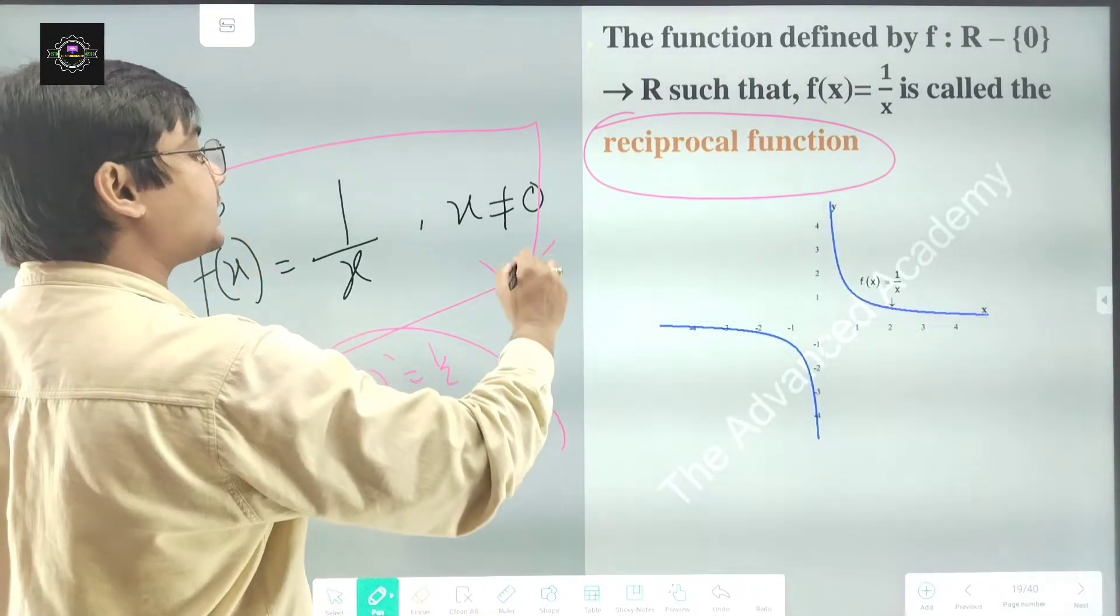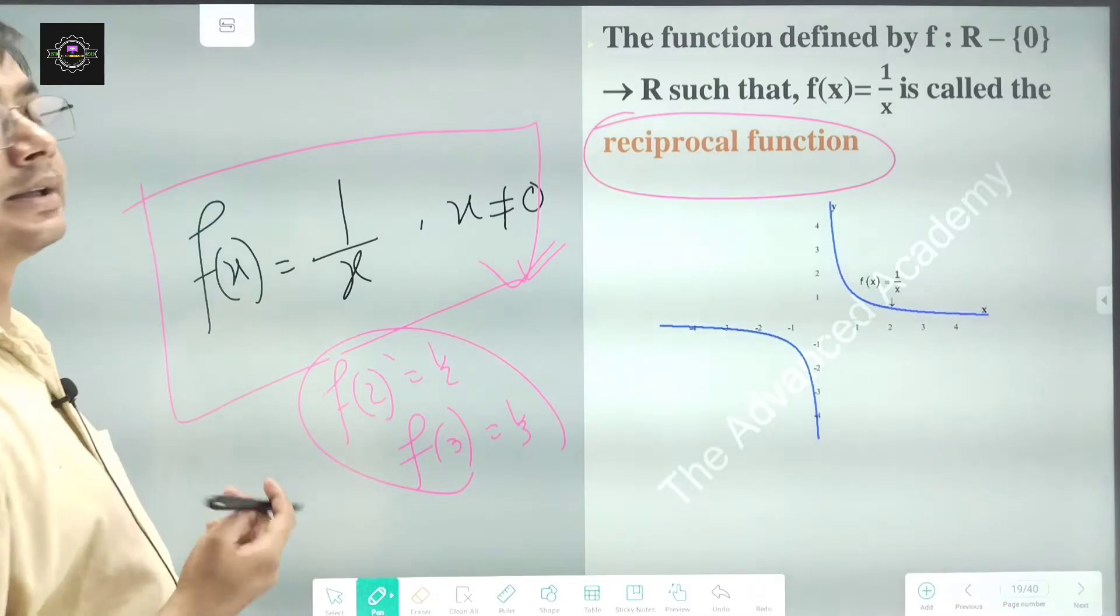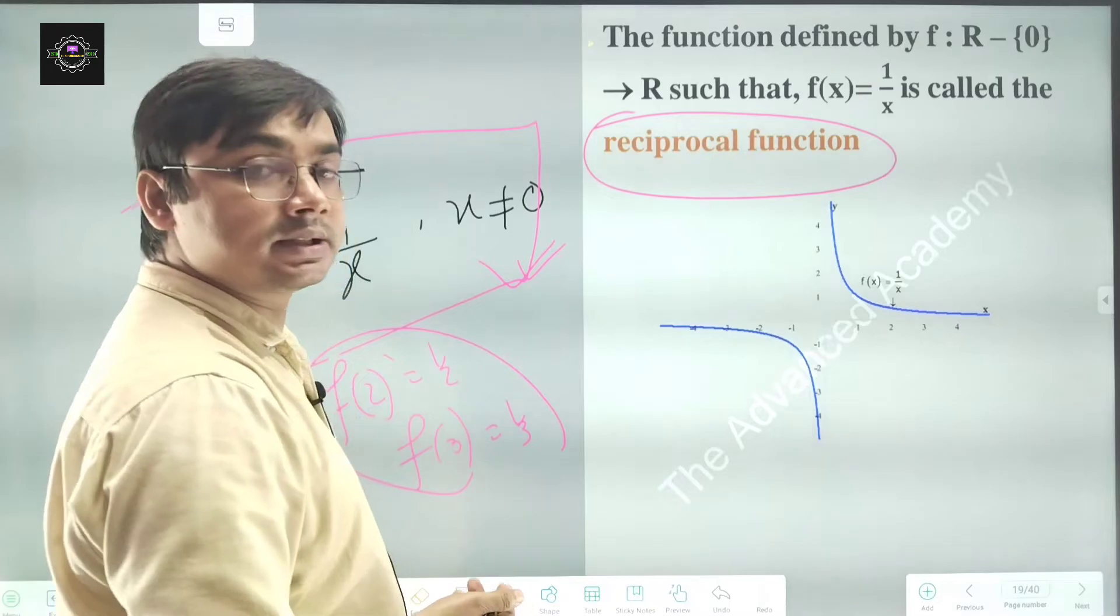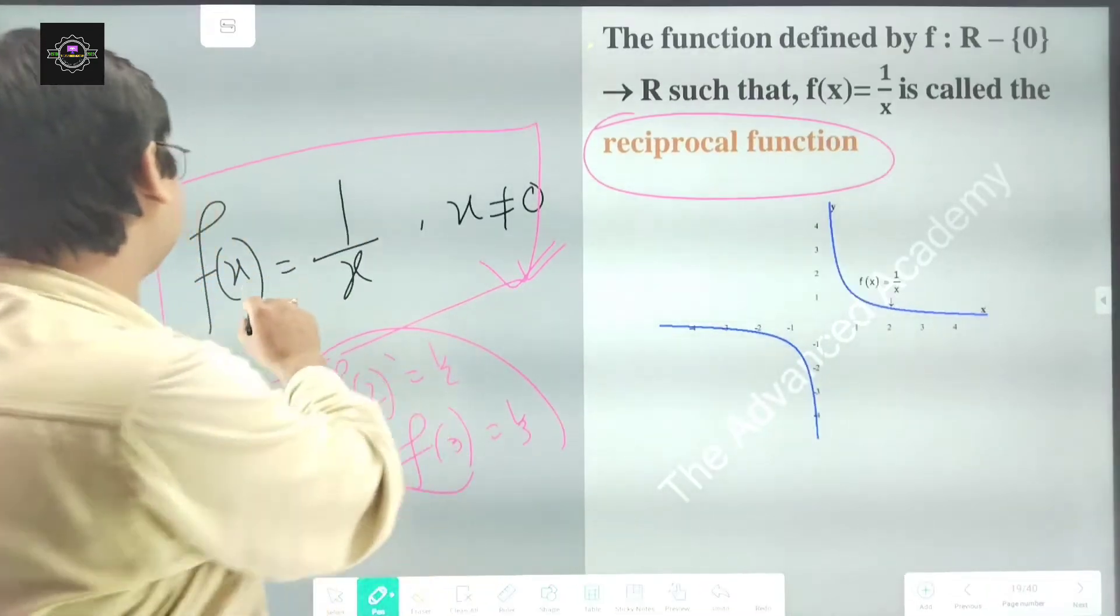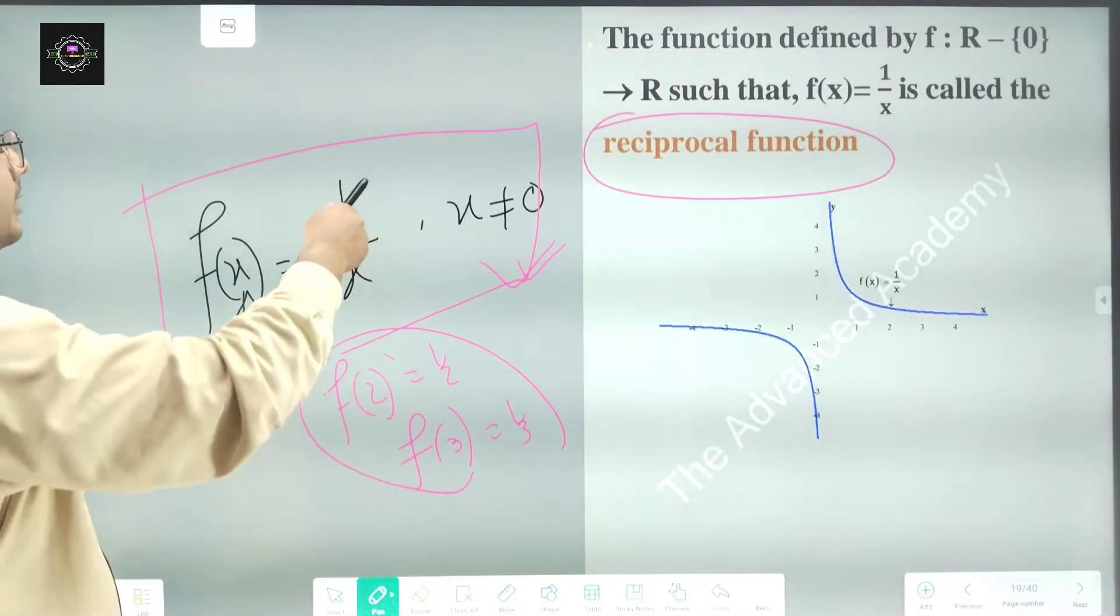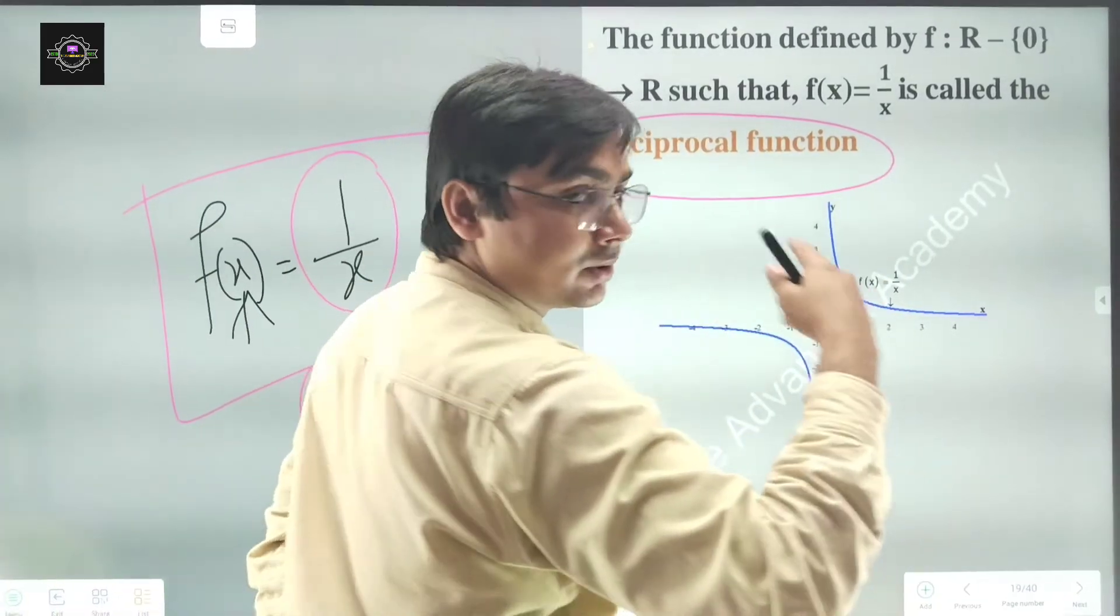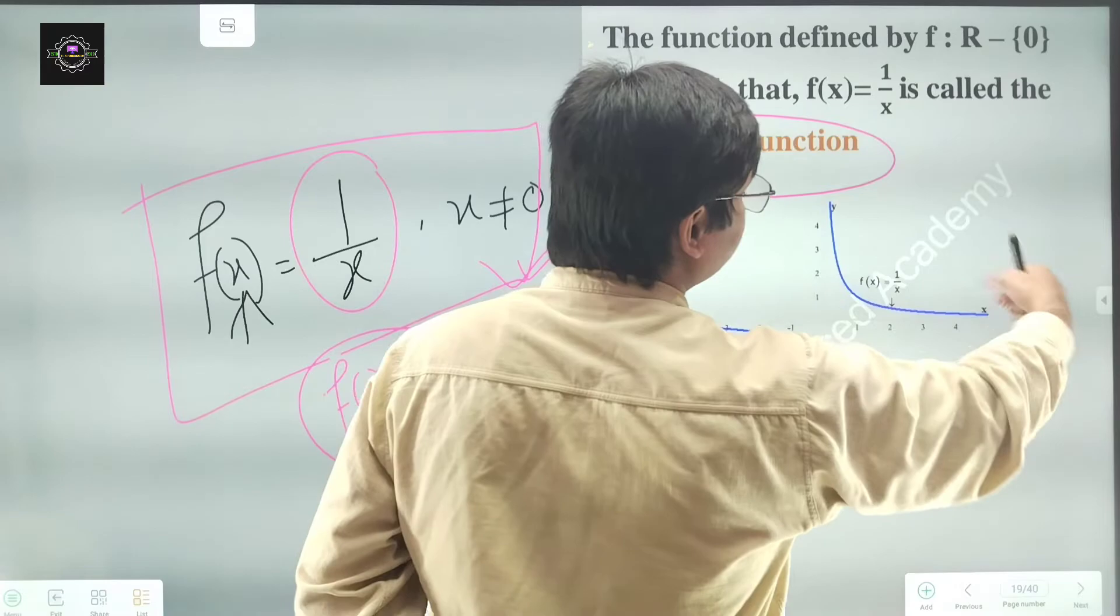This type of function is called the reciprocal function, and this is the graph for a reciprocal function. You see, if we put here any positive value of x, definitely you will get some positive value also. For any positive value of x, f(x) also will be positive.